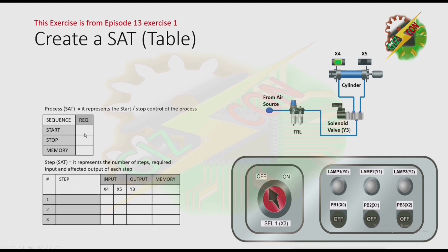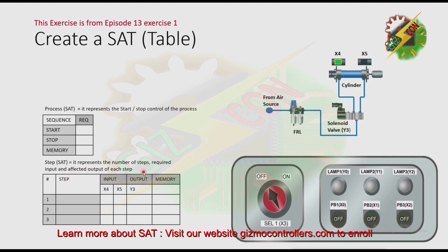Next, we need to create a SAC. By the way, we have two types of SAC: process SAC and step SAC. For process SAC, it represents the number of steps, required input, and affected output of each step.